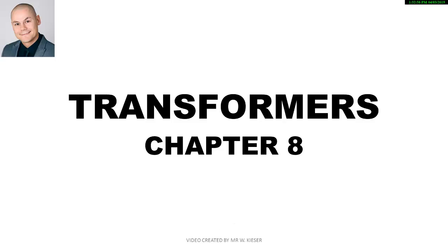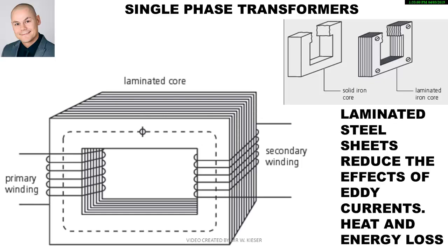Welcome to N2 Electrical Trade Theory, this is chapter 8 on transformers. A single phase transformer consists of an iron core. The iron core is divided up into many segments, almost like a loaf of bread that is thinly sliced up. These laminated steel sheets reduce the effects of any current heat loss and energy loss.